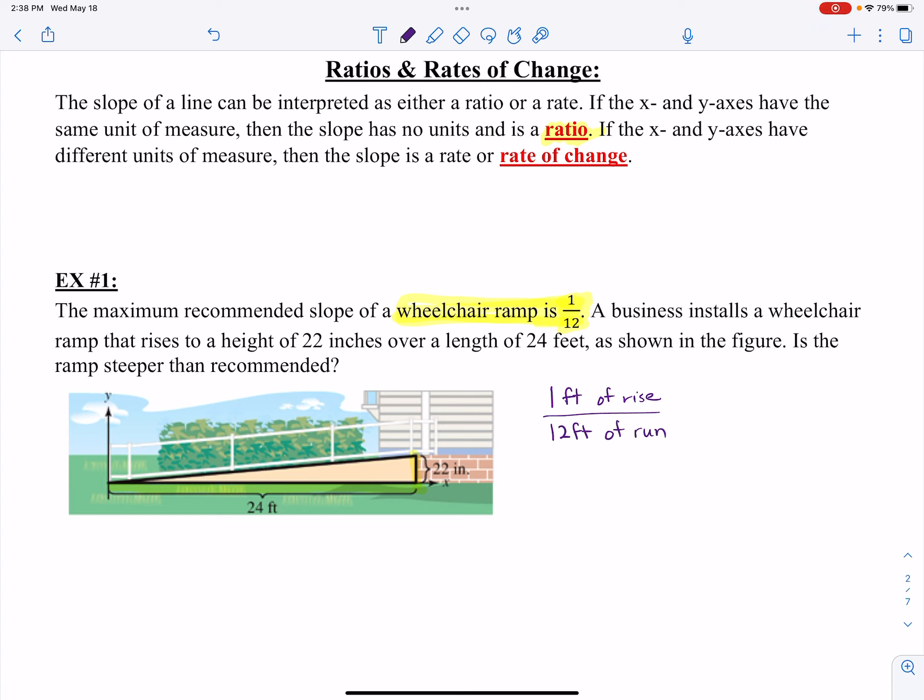So if I know that at the most, I need to only have 1 foot of rise for every 12 feet of run, and in this case they have 24 feet of run to 22 inches of rise. But be careful because these are in different increments. They're talking about 22 inches, that's just under 2 feet. 24 inches would be 2 feet.